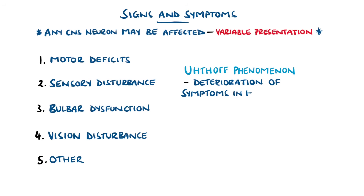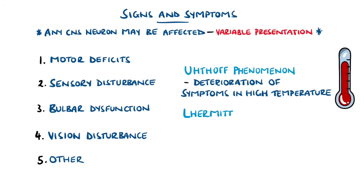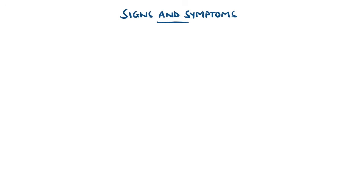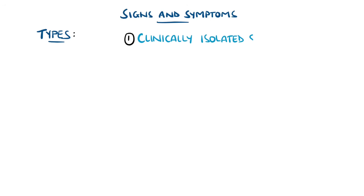Two features closely linked to multiple sclerosis are Uhthoff's phenomenon, where there is a deterioration in symptoms when exposed to high temperatures, and Lhermitte's sign, where there is a sensation of an electrical shock running down the back when the neck is flexed.